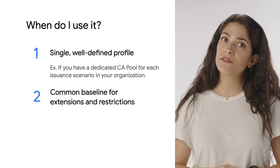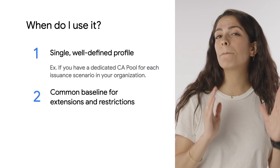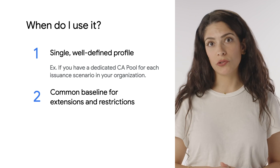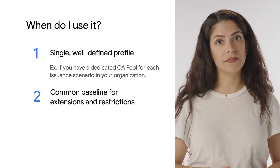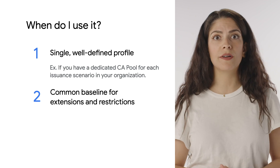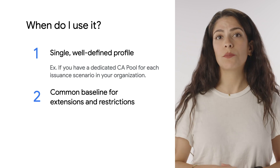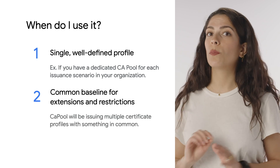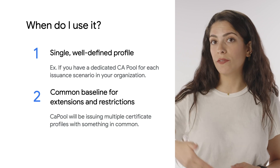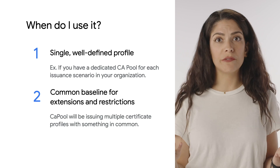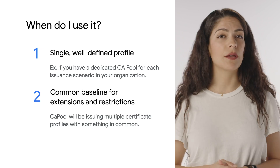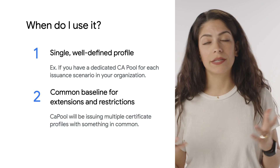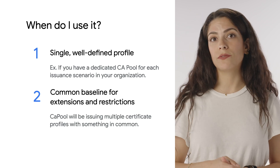Case two: you want to define a common baseline for X.509 extensions and additional restrictions that apply to all the certificate issuance profiles used with this CA pool. In other words, if your CA pool will be issuing more than one certificate profile, but all the certificate profiles have something in common, like max certificate lifetime or opinionated requirements for key types.